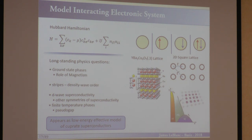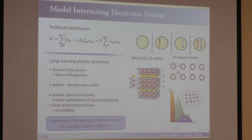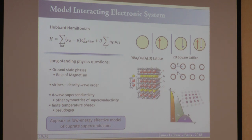The Hubbard model is a model for interacting electron systems. It's not intended to be a real representation of particular materials. However, there are specific materials for which Hubbard models are particularly relevant. There's been a lot of work done in the last 40 years on Hubbard models, but there still remain longstanding physics questions. The ground state phases of this model are not rigorously understood. The details of how magnetism versus charge ordering plays a role, even within simple lattices like square lattices, are not necessarily understood.